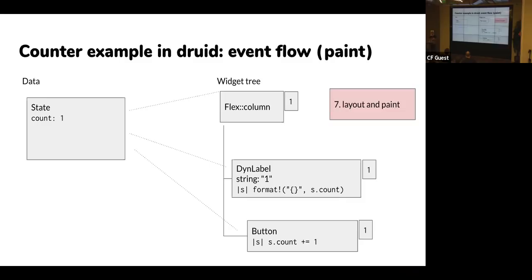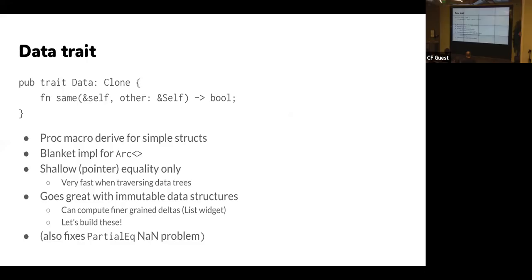Then you do layout and paint, which could be a whole talk by itself — we'll assume that works by magic. The diffing is the heart of this: you're diffing the old app state to the new app state, and that better be efficient — if you're running through megabytes of complex application state you might not achieve interactive performance. So we encourage the app state to be written in a particular way: testable with simple pointer equality. We have this Data trait, which looks a lot like PartialEq but does a shallow comparison instead of a deep diff — if it's an Arc, we just check if the pointer changed.